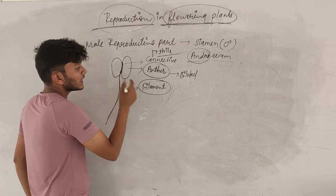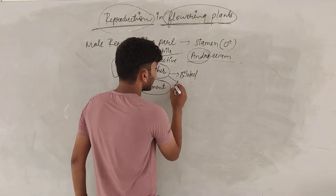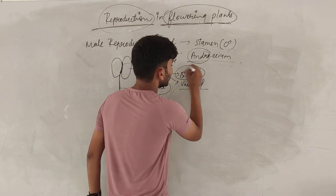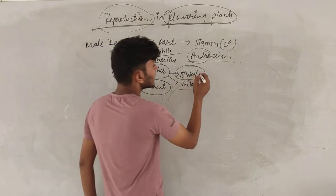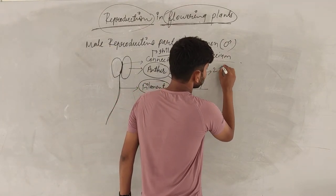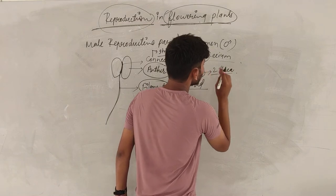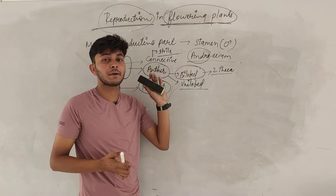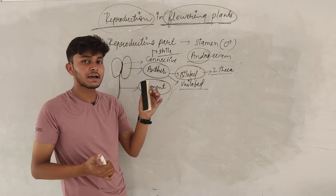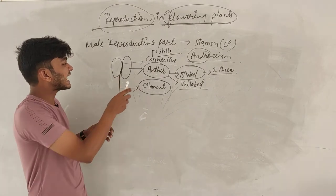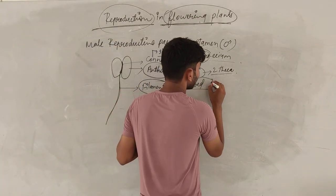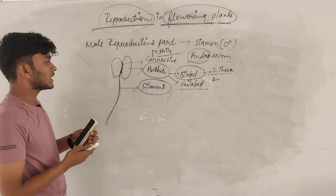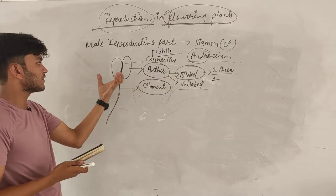Now we will talk about the unilobed and bilobed anther. Unilobed is rare; mainly the anther is bilobed. Each lobe contains two thecae. This means one anther can have four thecae, all situated inside the anther.